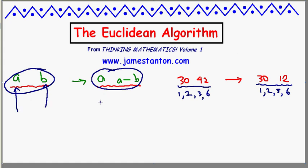That makes sense. If my original two numbers are, say, multiples of 5, then one will remain a multiple of 5 — nothing's changed to it — and the difference of two multiples of 5 is again a multiple of 5. If they're both multiples of 24, the result will again be a multiple of 24. So the process of subtraction does not change factors.